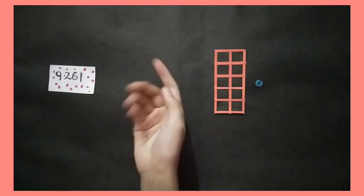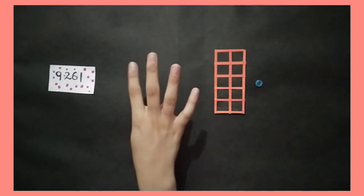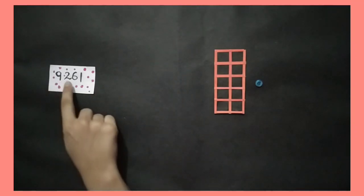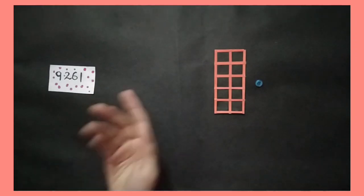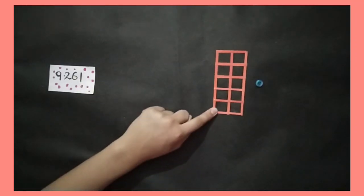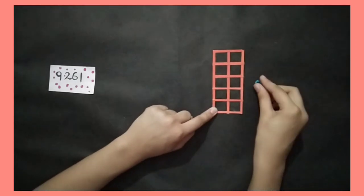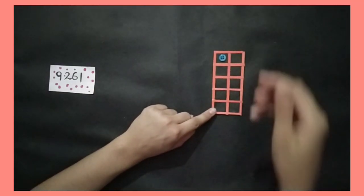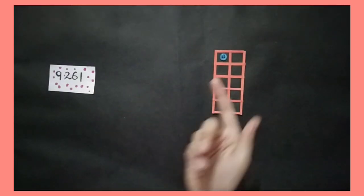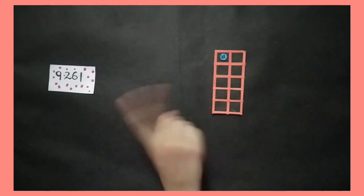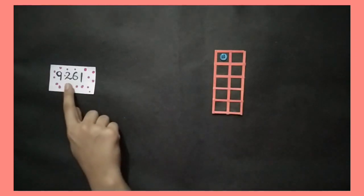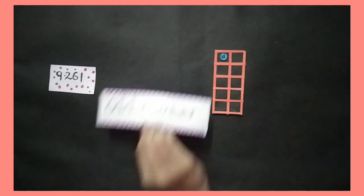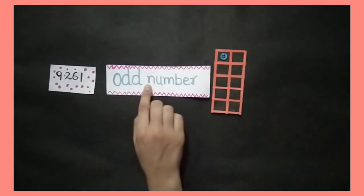Now we will take a 4-digit number, 9261. We will only take the digit at the ones place, that is 1. Count with me and place 1 button in the button box: 1. You can see that digit 1 does not form a pair. So 9261 is an odd number.